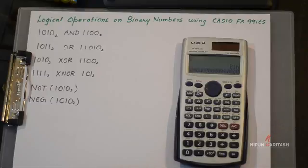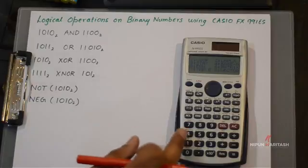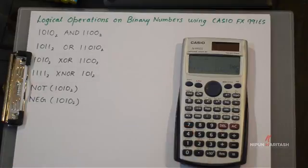In order to do that we'll need to set our calculator in the base mode. For that you can go to mode and press 4, and by default it starts at the decimal number system.